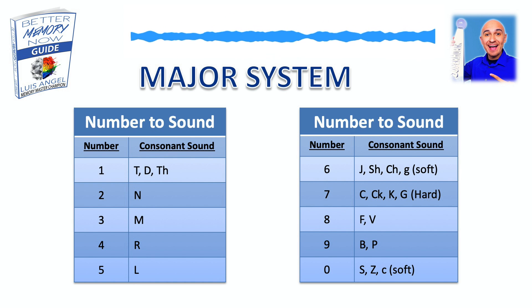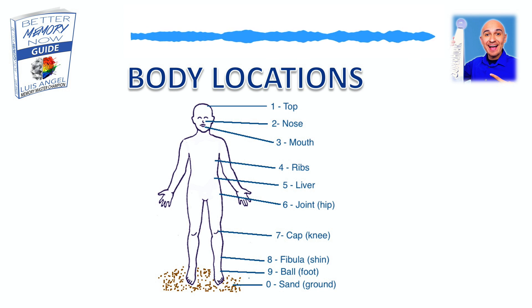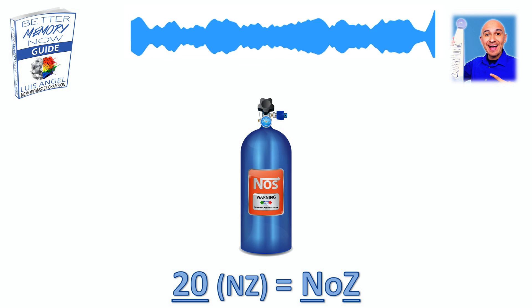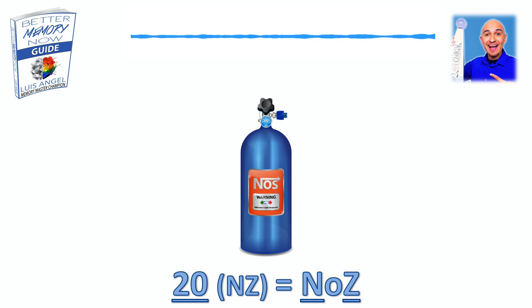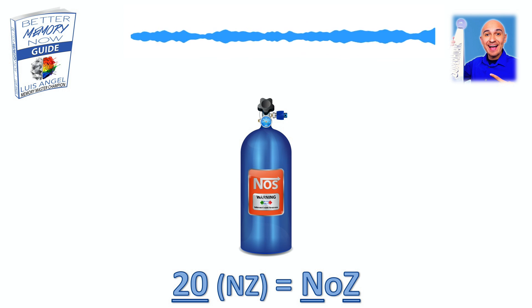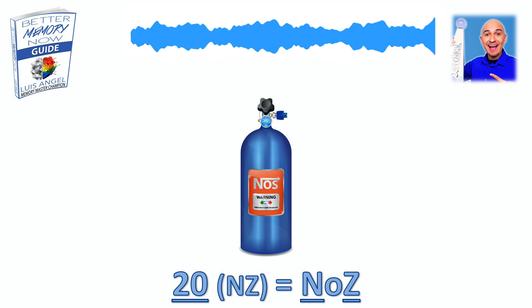So for the 20s, we know that that is the N sound, as we laid out in our body locations. For every single 20, the image is always going to start with the N sound, and then we attach another sound for that second digit. So the first one, Noz — N-O-Z — for 20. We have the N sound for the two, and for the zero, the S sound for sand. So picture a Noz tank, like the ones you see in Fast and the Furious, and you squirt that Noz tank all over the sand on the ground.